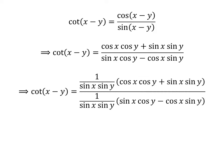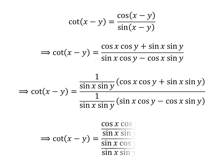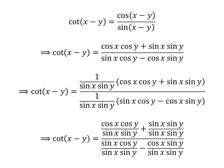As multiplying the numerator and the denominator by a common factor does not change the value of the fraction, let's multiply the numerator and the denominator by 1 upon sine of x times sine of y. Here, this multiplication gave us this expression.